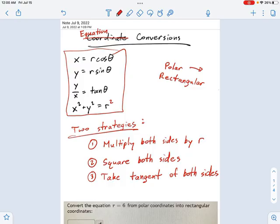What makes polar to rectangular a little bit more complicated is the fact that we have to make decisions. You cannot just plug these things in and hope for the best, cross your fingers and you'll win. You need a strategy, and there's two strategies. Multiply both sides by r or square both sides. And every now and then, there's another thing you have to do, or I don't know, take the tangent of both sides.